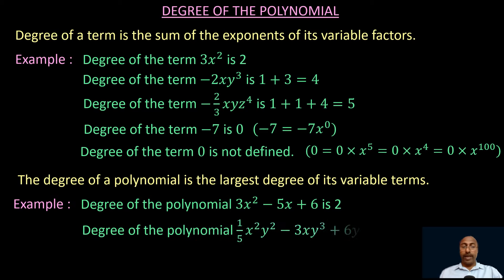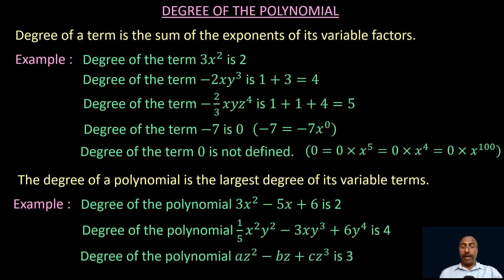The degree of the polynomial 1/5·x²y² minus 3xy³ plus 6x/4 is 4, because the degree of the first term is 2+2=4, the second term is 1+3=4, and the third term is also 4, making the highest degree 4. The degree of az square minus bz plus cz cube is 3, because the degrees of the three terms are 2, 1 (wait — the second term has degree 1... actually degree of bz is 1), and 3 respectively, so the highest is 3.